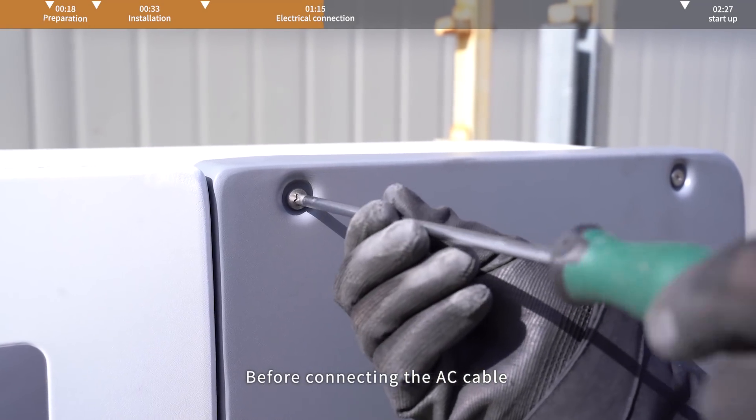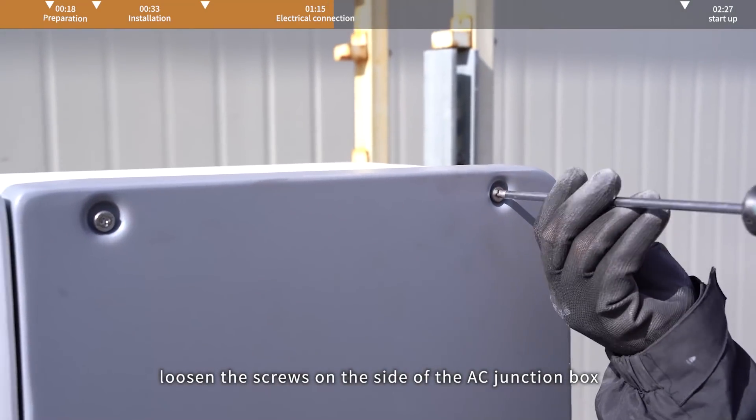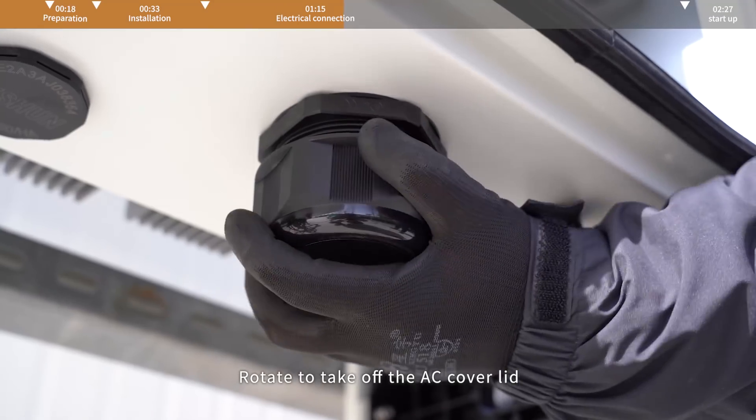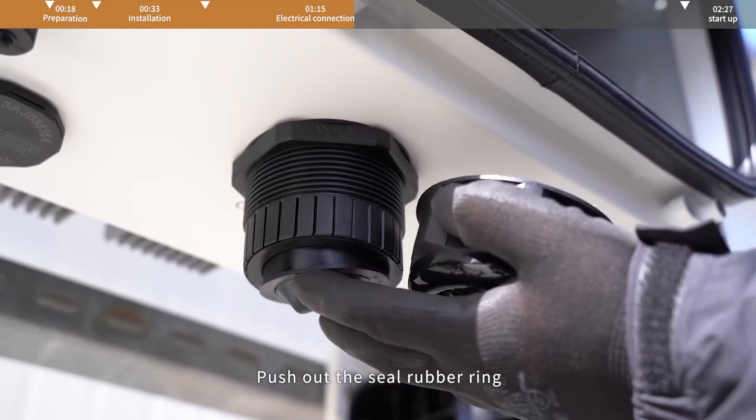AC side connection. Before connecting the AC cable, loosen the screws on the side of the AC junction box and open it. Rotate to take off the AC cover lid and push out the seal rubber ring.